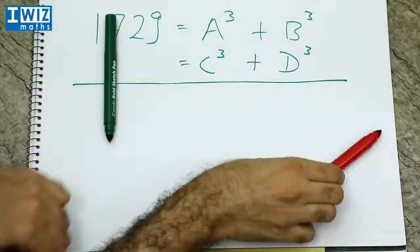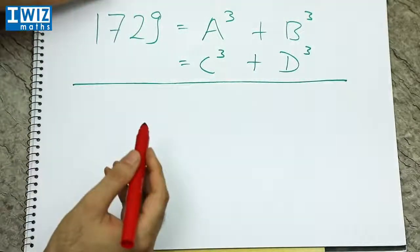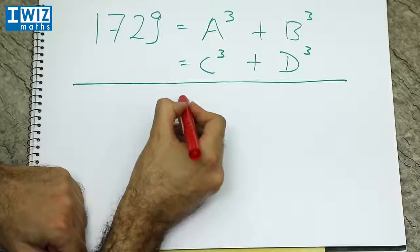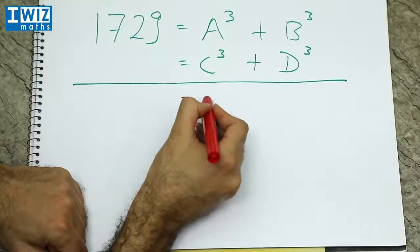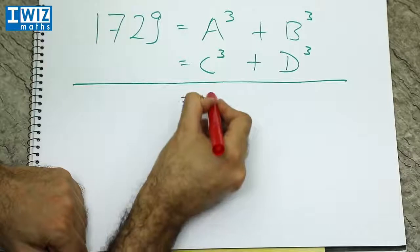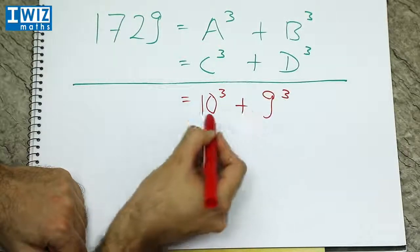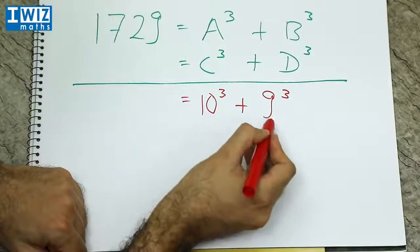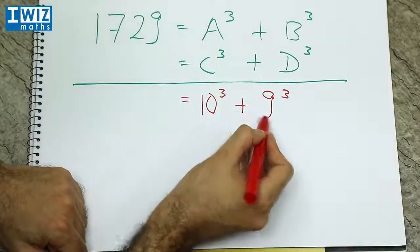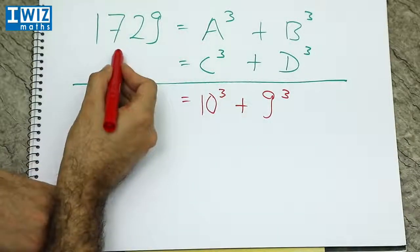So the answer is 1729 can be written as 10 cubed plus 9 cubed. 10 cubed is 1000, 9 cubed is 729. So you add the two together, you get 1729.